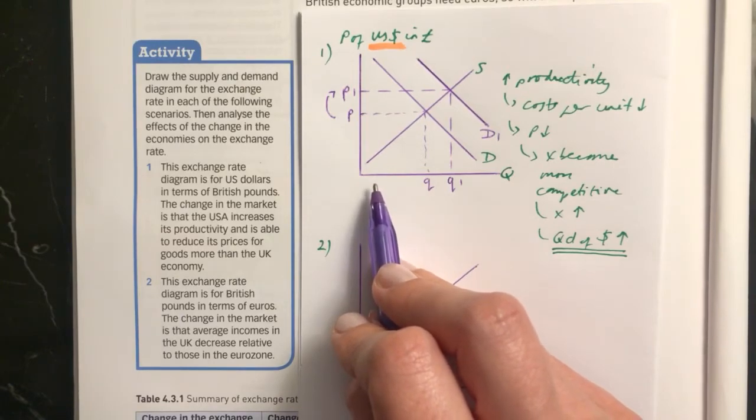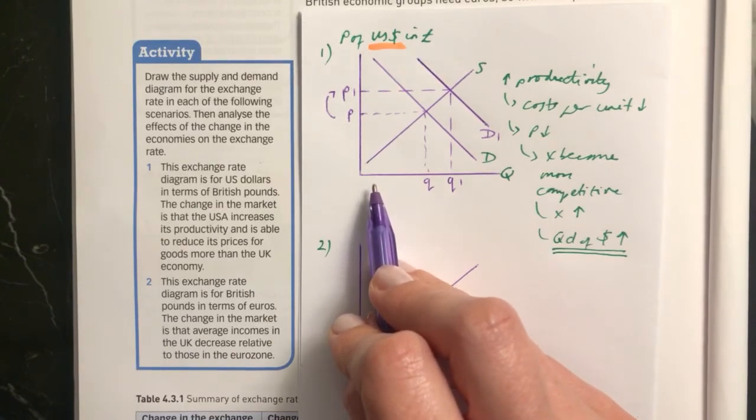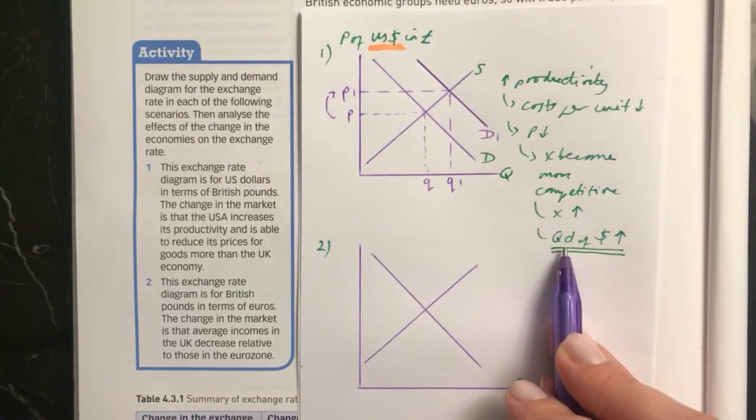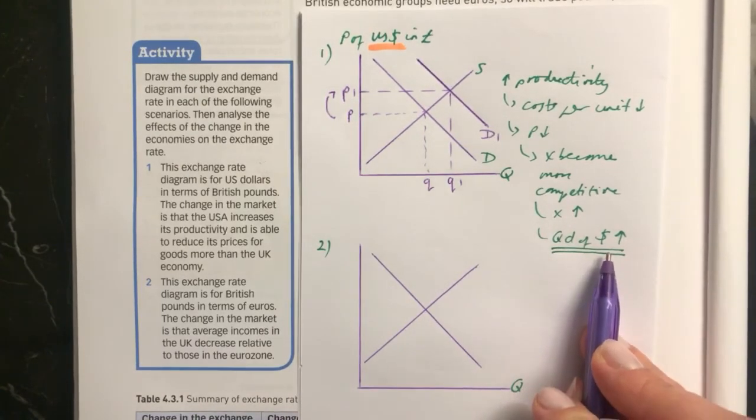but also if they don't have such good productivity in the UK, it will mean that UK products are more expensive. So they'll be buying even more imports from the US, and there'll be an even greater increase in the quantity demanded of US dollars.